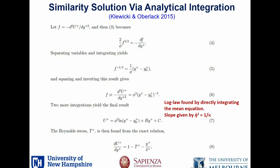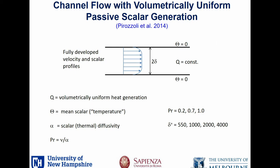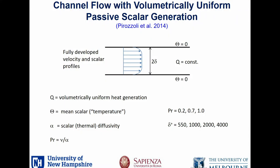Now what I want to do is turn to the scalar analysis. What Sergio did was consider the same channel flow — fully developed in the velocity field — and also fully developed in the scalar field in the same way. The scalar is not simply linearly increasing in amplitude downstream; instead, you have a constant flux interior everywhere, with uniform heat generation, and thus a constant flux outward. He did these computations over a pretty big Reynolds number range and for Prandtl number variations between 0.2 and 1, which is a remarkable set of simulations.